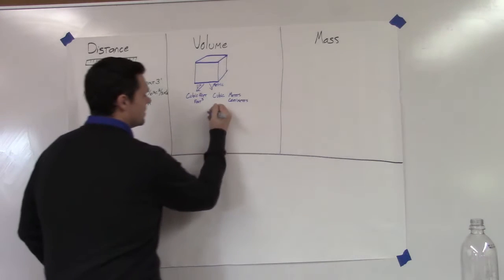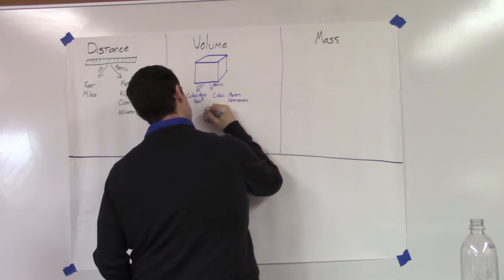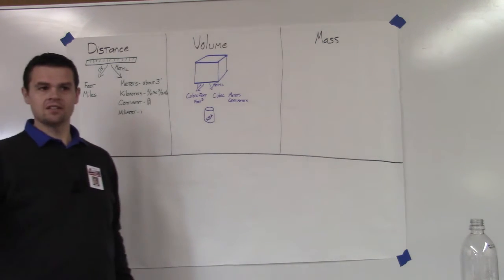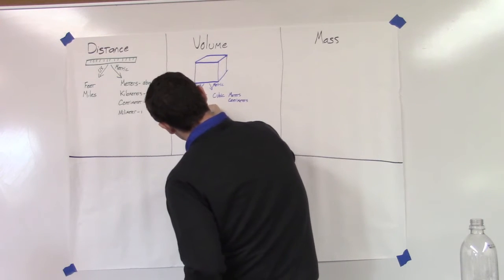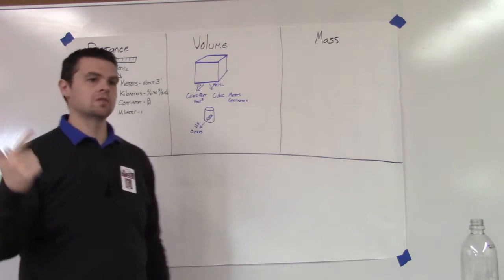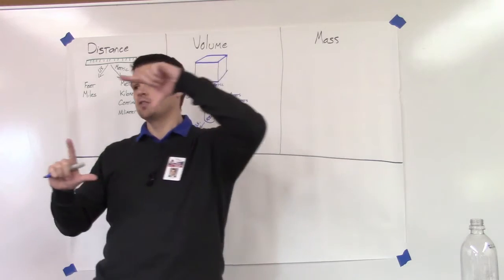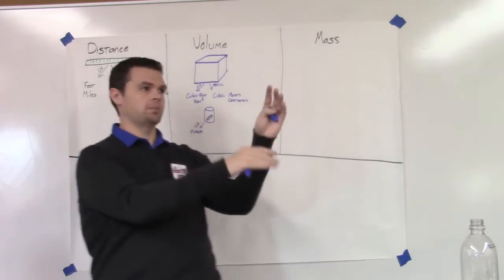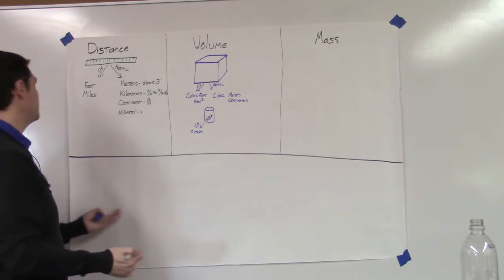For liquid volume, let's say we have a can of soda — that's 12 ounces. In the US we use ounces, pints, quarts, gallons, teaspoons, tablespoons. It gets so confusing that I had to print out a chart at home — three tablespoons equals a quarter cup, and so on. It's kind of ridiculous, which is why I really like the metric system for science.